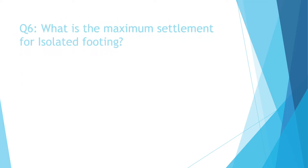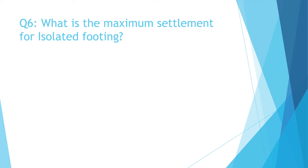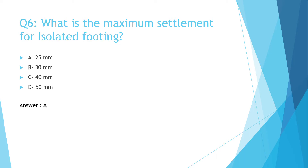Question 6: What is the maximum settlement for isolated footing? A. 25 mm, B. 30 mm, C. 40 mm, D. 50 mm. The correct answer is A: 25 mm.